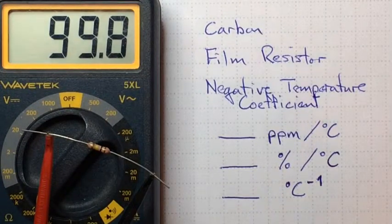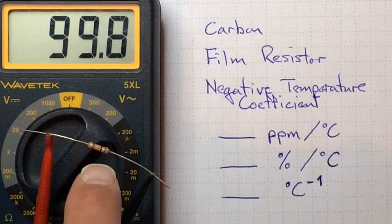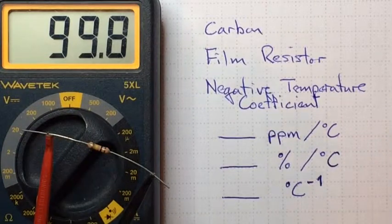This is a carbon film resistor, this little guy right here, typical of what goes into a lot of electronic systems.